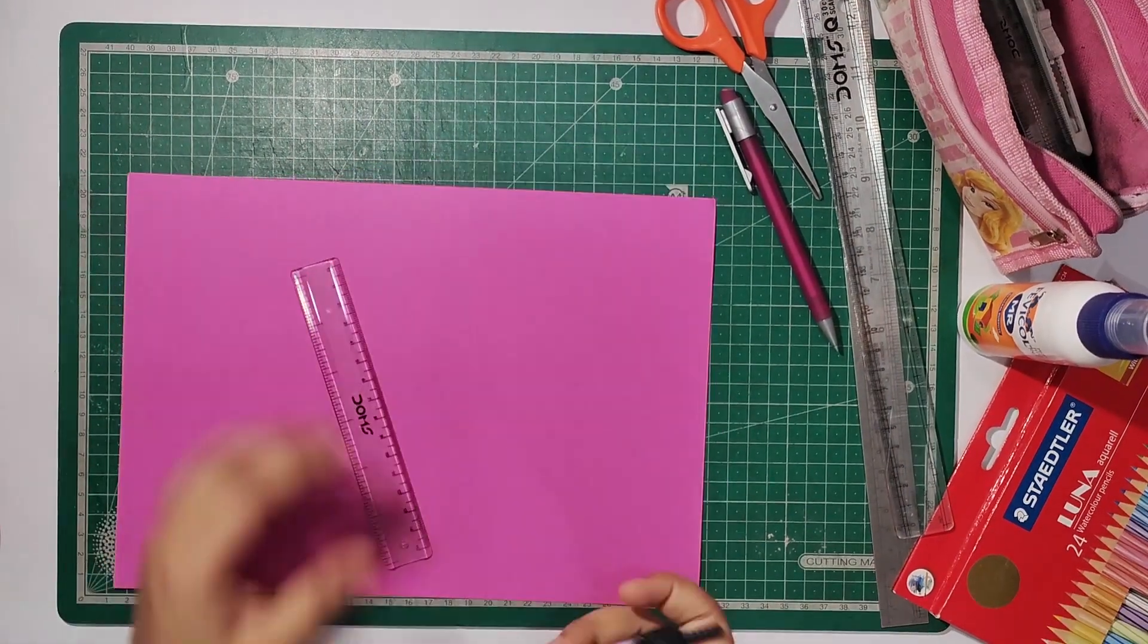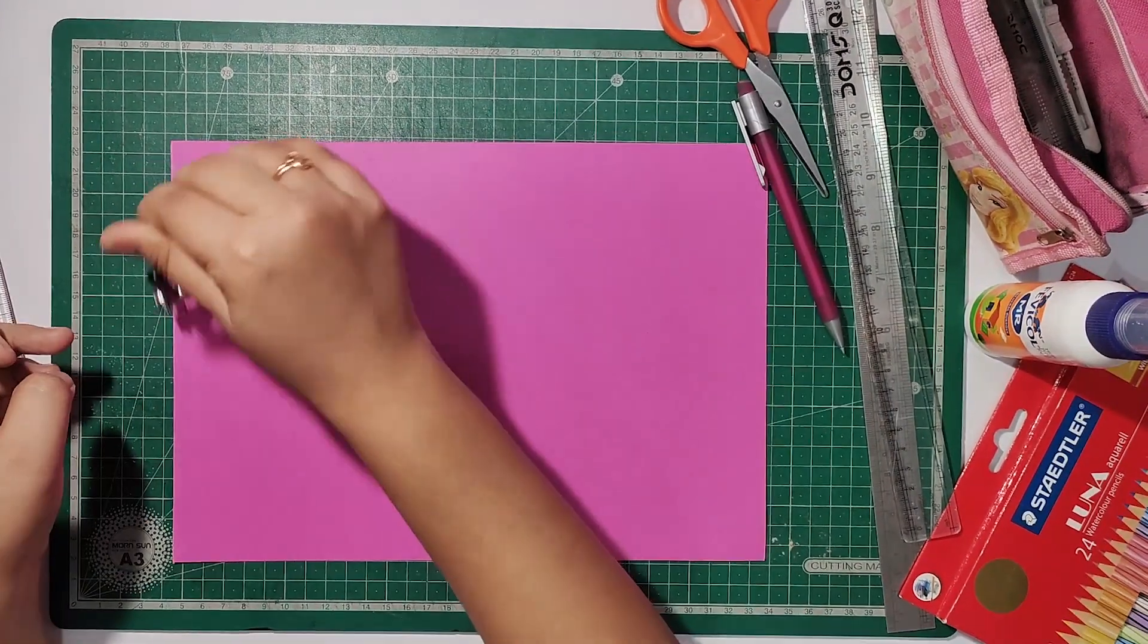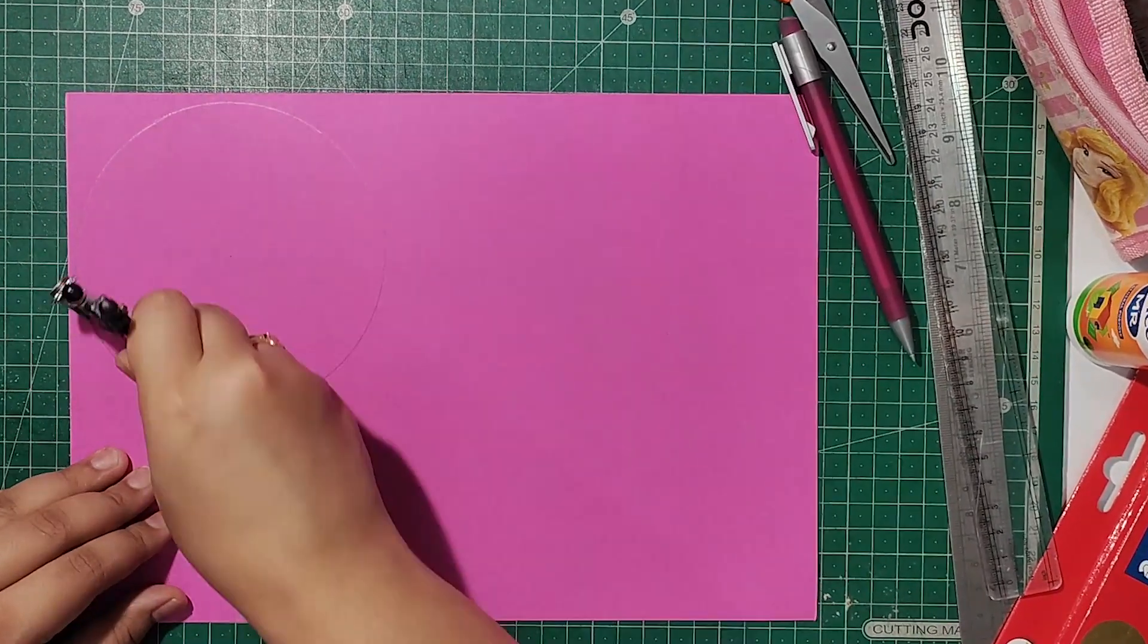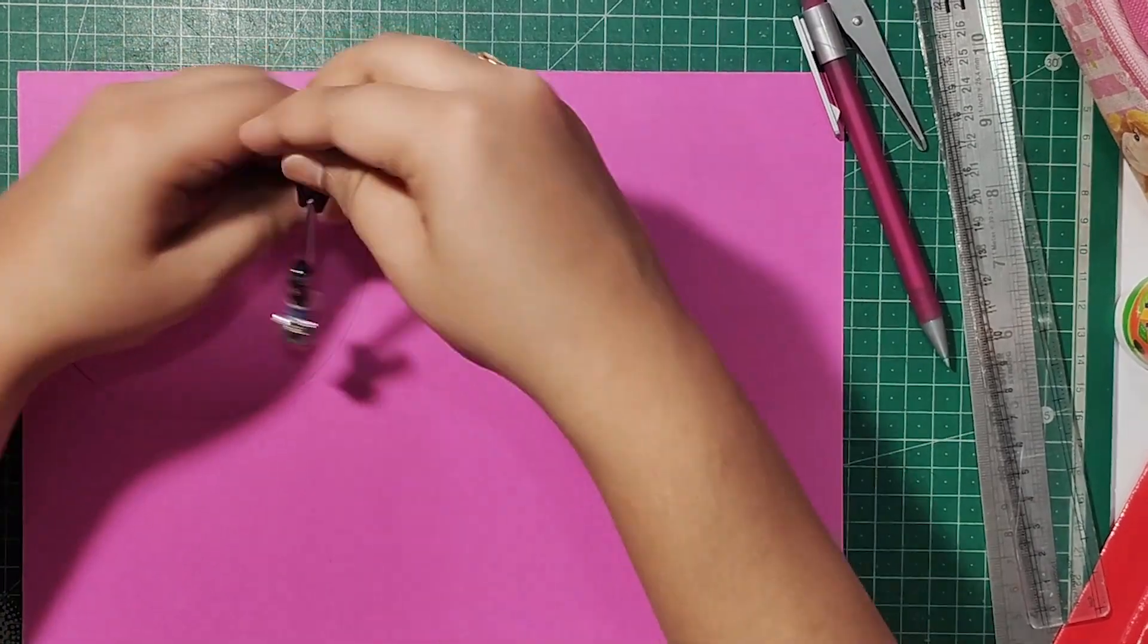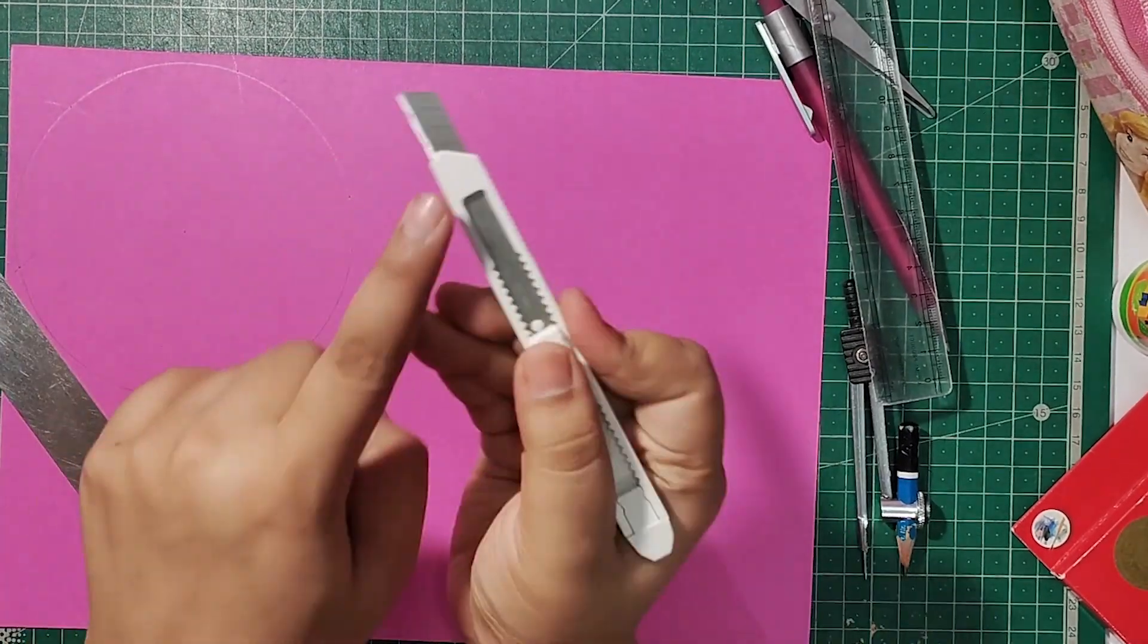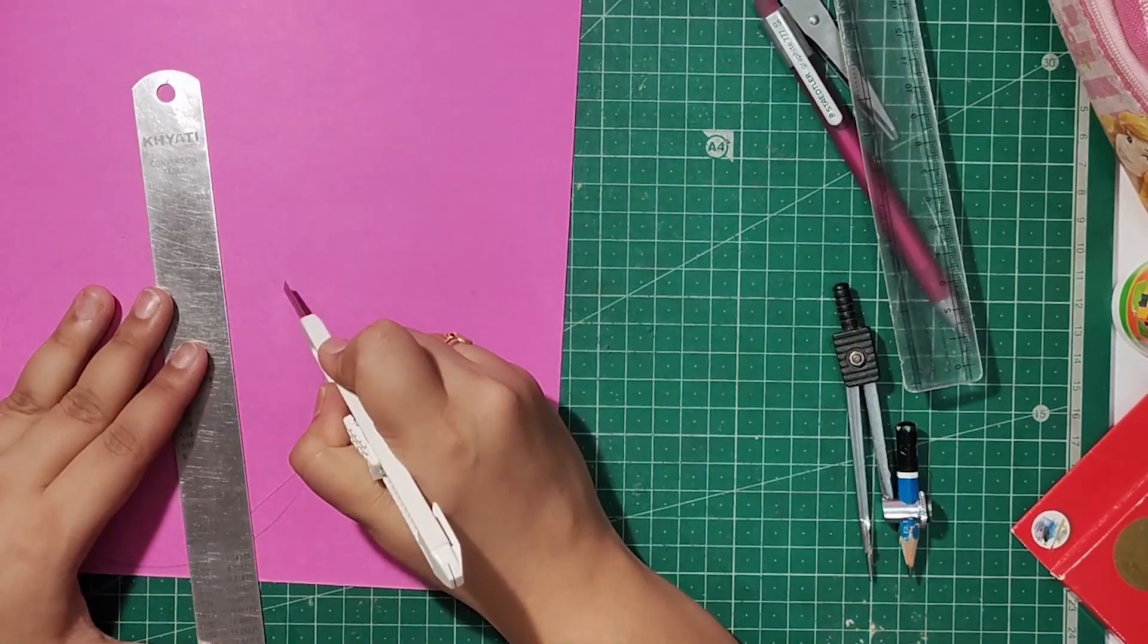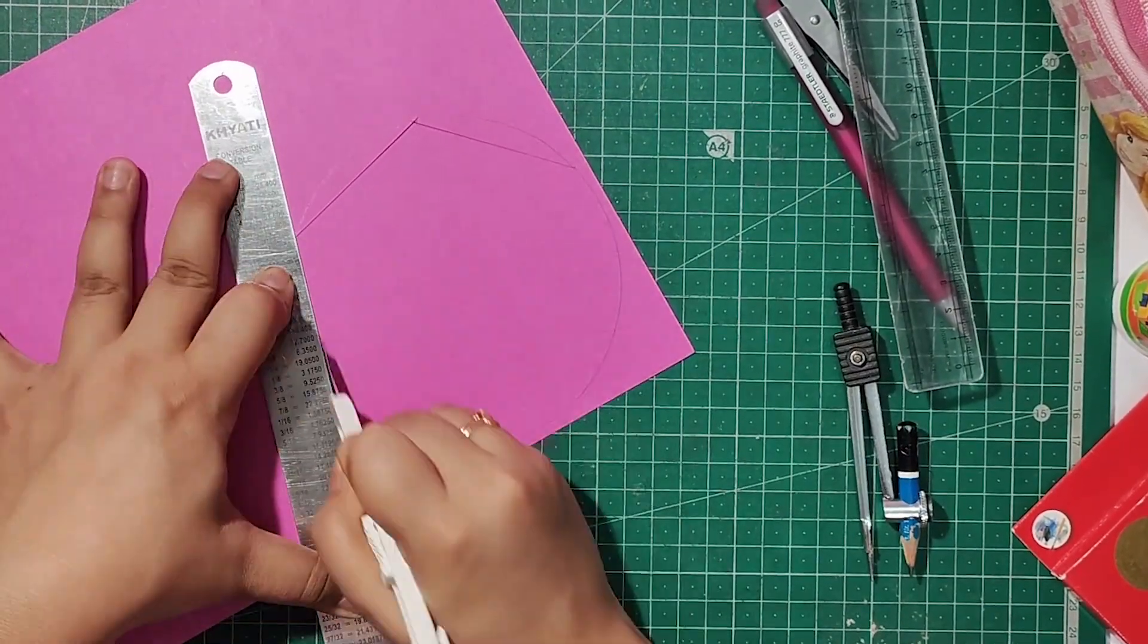First we will prepare a hexagonal shape because our card is basically hexagonal in shape. Here I have a hexagonal template for my card. If you want to make the card larger or smaller, you can adjust the hexagonal shape by 3 to 4 cm.